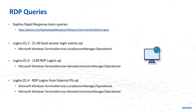The first query that we typically run is the 21 to 40 local session logon events. This actually queries for the typical event IDs that we're looking for in the terminal services local session manager operational event log to show connections, disconnects, reconnections, and all of those sorts of things.